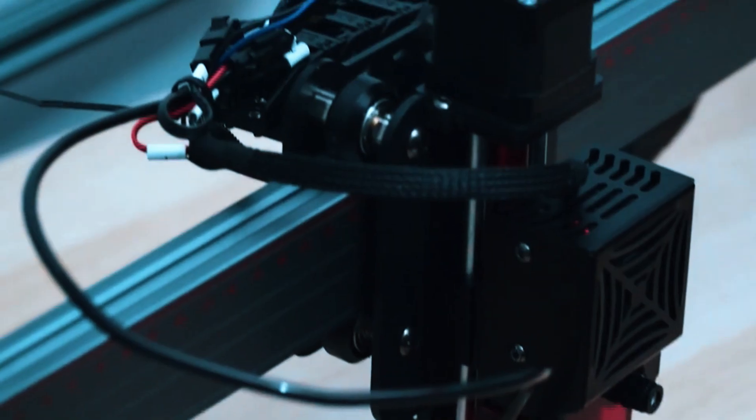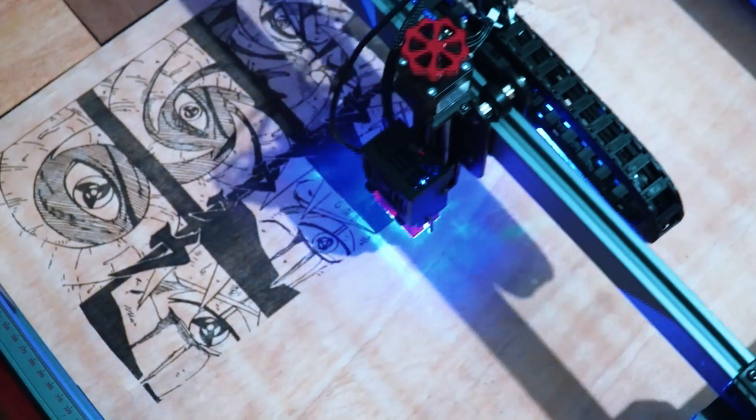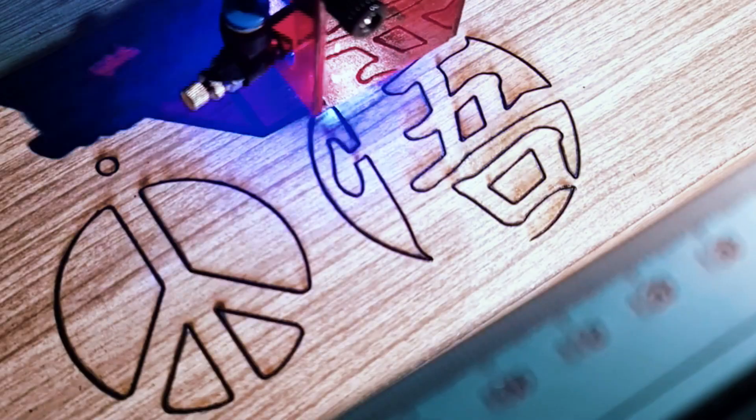Its high-output diode module provides enough energy to cut through thicker wood pieces, engrave coated metals with cleaner detail, and work across a wide range of materials with noticeably higher precision.